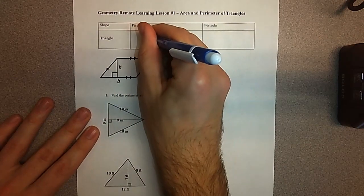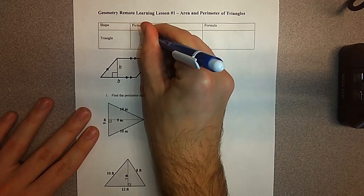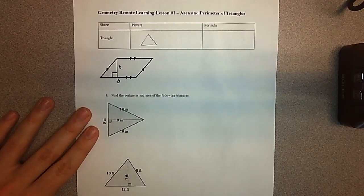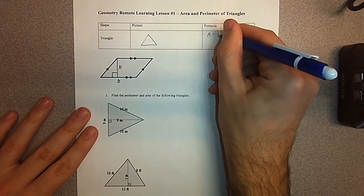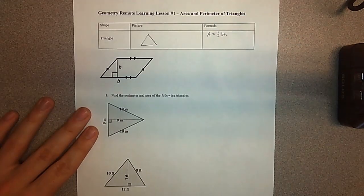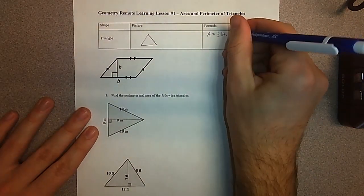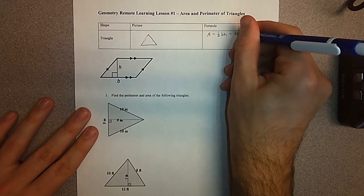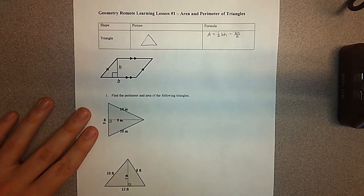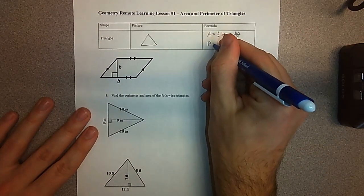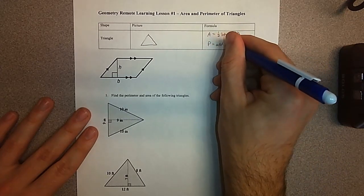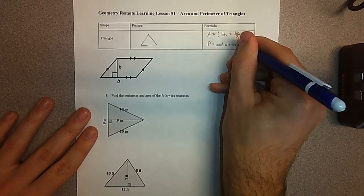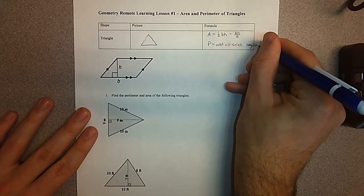So first of all, if we have a triangle, I'm going to talk about area first. Most of you probably know this already, but area is one half times the base times the height. Some of you might write this as base times height divided by two, that is the same thing. And perimeter, we would add up the sides, so add all sides together.